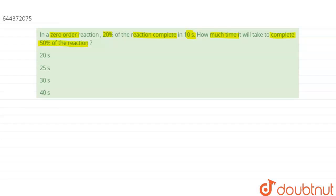In the question we have been given that there is a zero order reaction and 20% of the reaction completes in 10 seconds. We have to find out the time in which 50% of the reaction will complete.